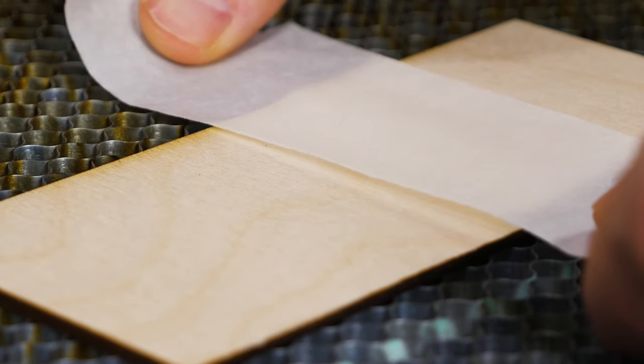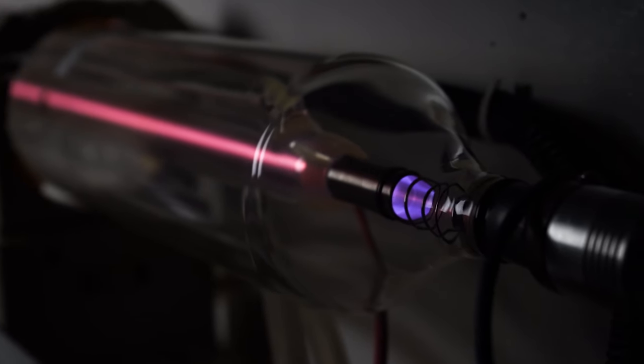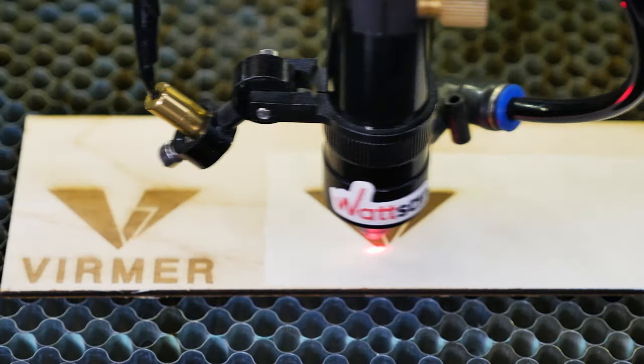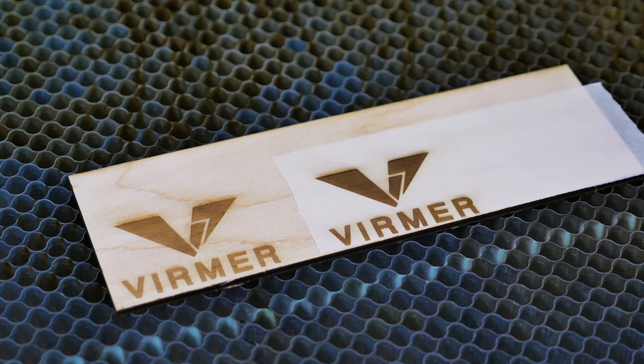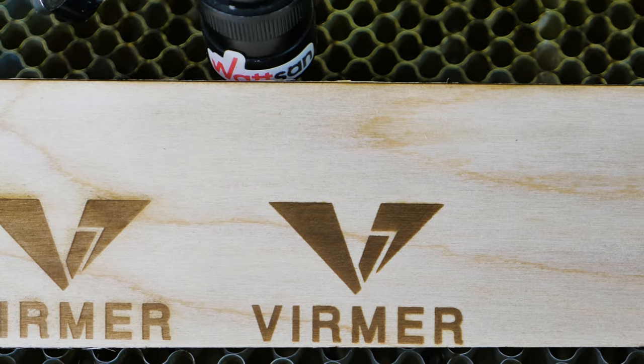Paste over the engraving area with a tape. Do not worry, the laser power will not be affected. The tape will help to prevent fouling beyond the edges of the design. After engraving, peel off the masking tape and you have a good result.